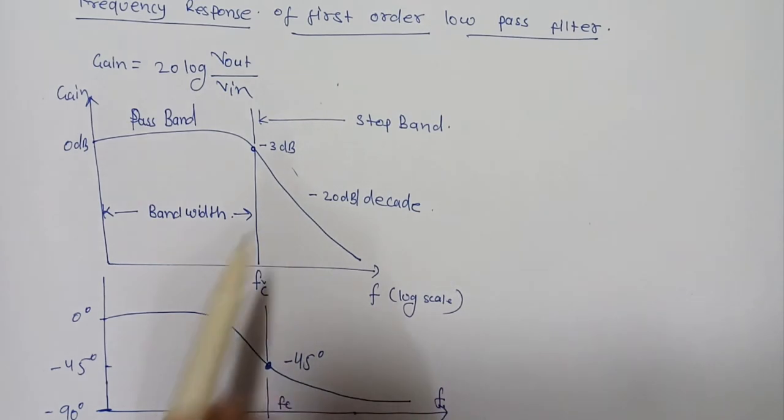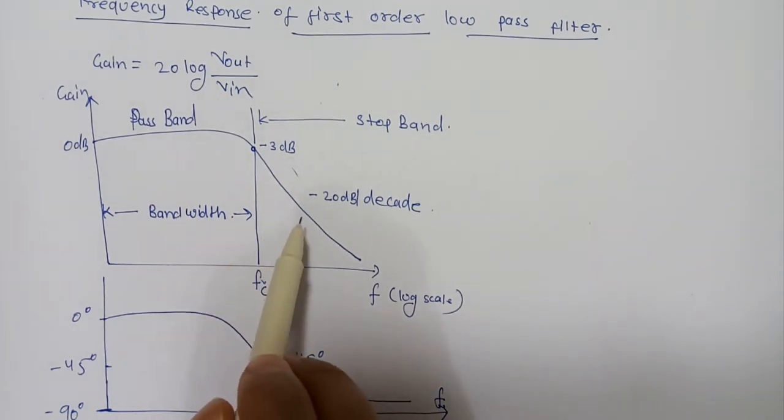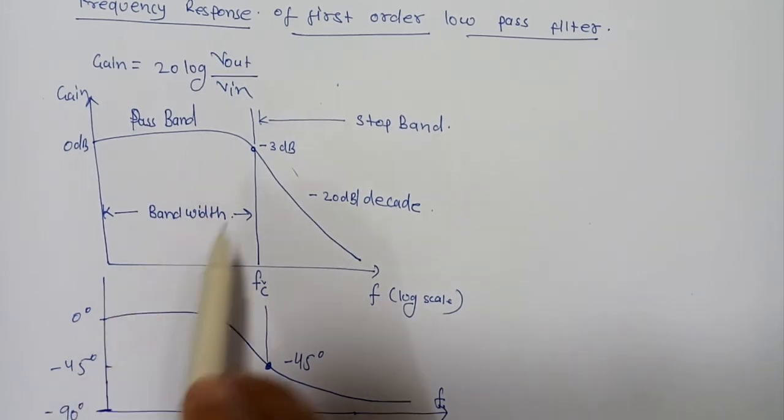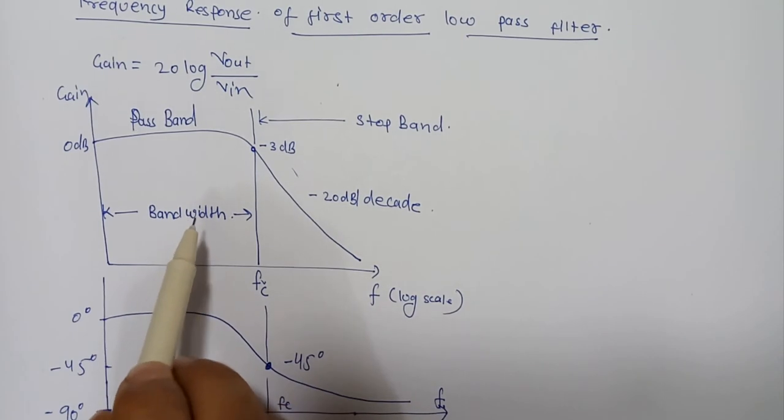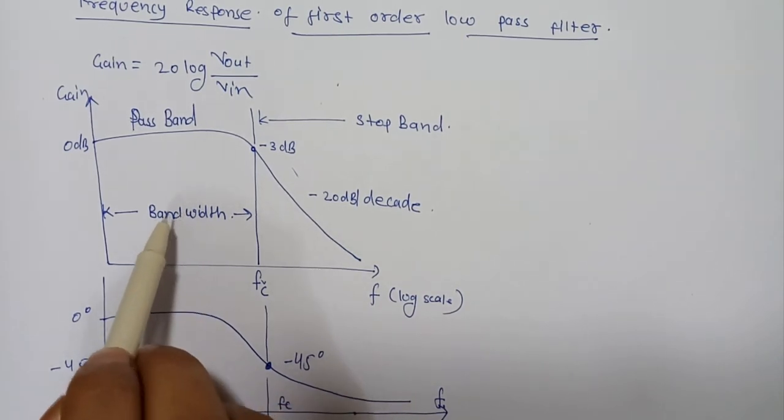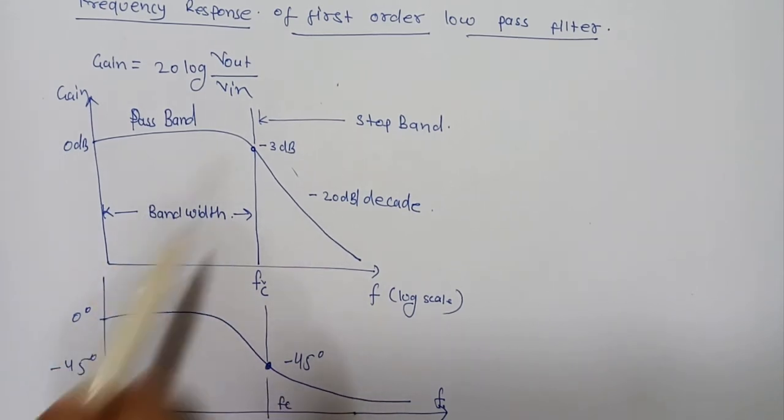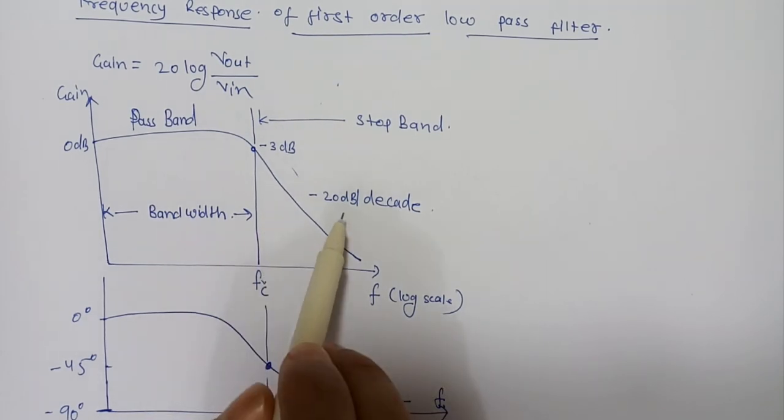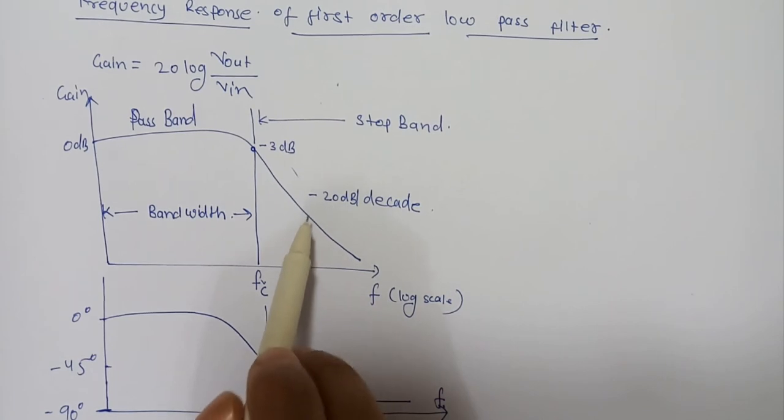For this type of low pass filter circuit, all the frequencies below the cutoff frequency Fc that are unaltered with little or no attenuation are said to be in the filter passband zone. This passband zone also represents the bandwidth of the filter. Any signal frequency above this cutoff point is generally said to be in the filter stopband zone and will be greatly attenuated.